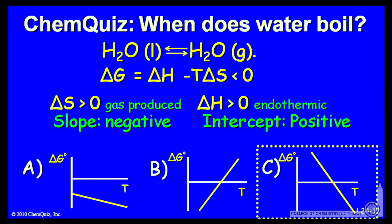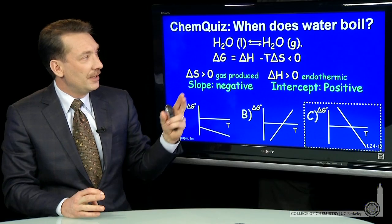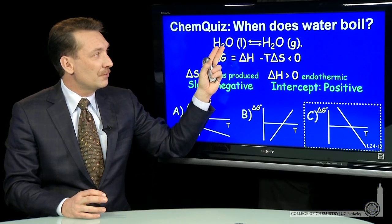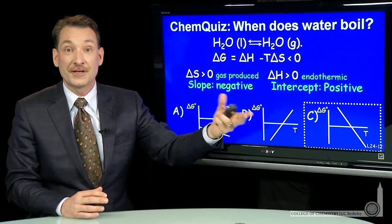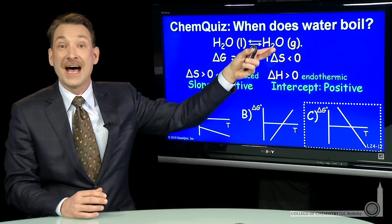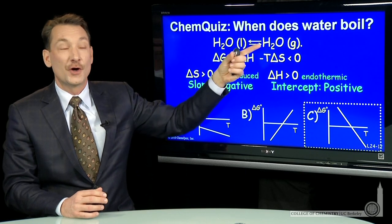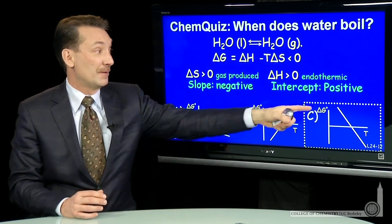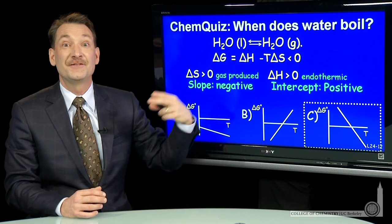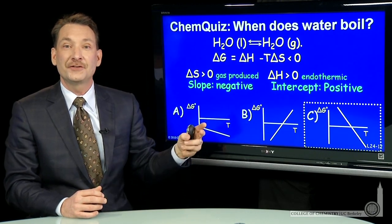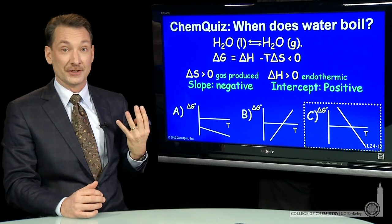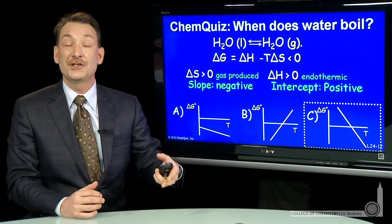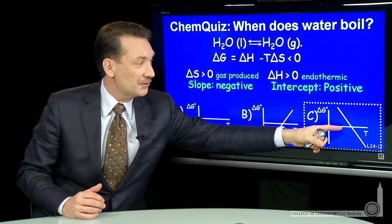You also could have come at this from a different perspective. You could have said, liquid water going to gaseous water, that's favorable at high temperatures. I know that. The higher temperature you go, the more gas is favored. So one atmosphere, because we're talking about standard state, one atmosphere of gas is favored at higher temperatures. So delta G should be negative at higher temperatures. And the lower the temperature, the liquid should be favored, so delta G should be positive.